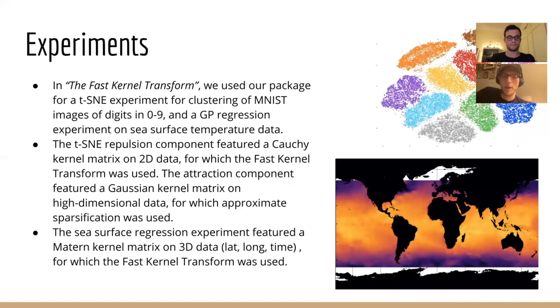On this slide, we review two experiments which leverage the tools in the fast kernel matrices package. The first experiment is a t-SNE implementation for clustering MNIST images of digits between 0 and 9. This experiment used the fast kernel transform for the Cauchy kernel matrix, which appears in the repulsive component of t-SNE, and approximate sparsification for the Gaussian kernel matrix, which appeared in the attractive component of t-SNE. In the second experiment, the Gaussian process regression for sea surface temperature data, we use the fast kernel transform for the Matern kernel matrix.